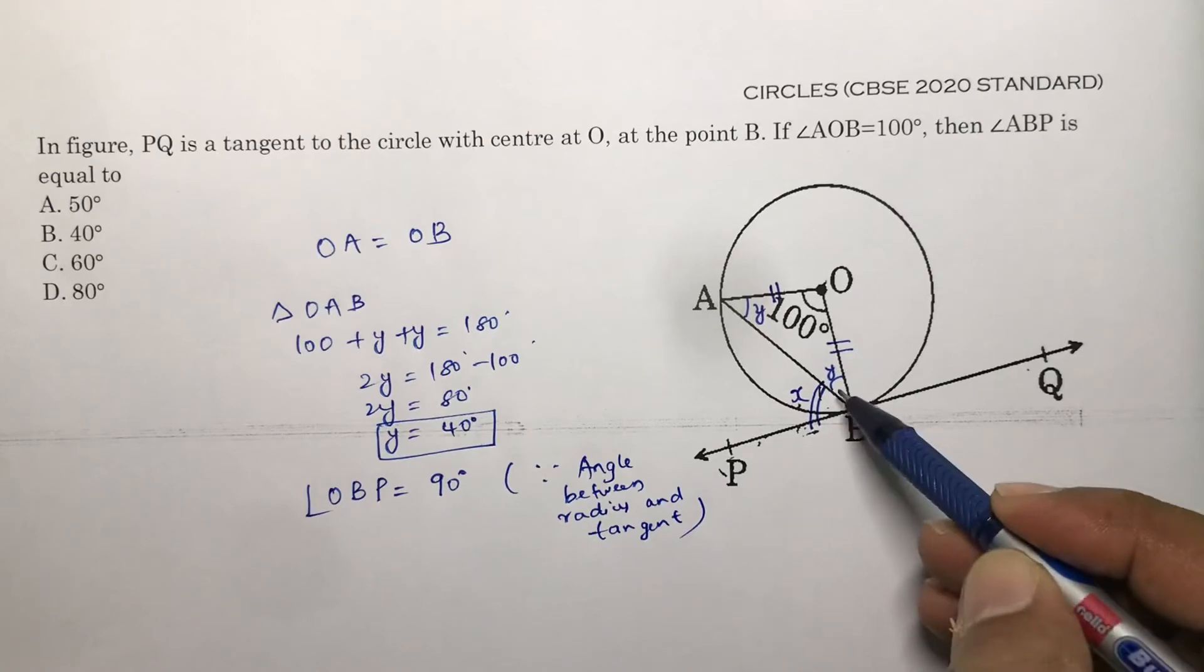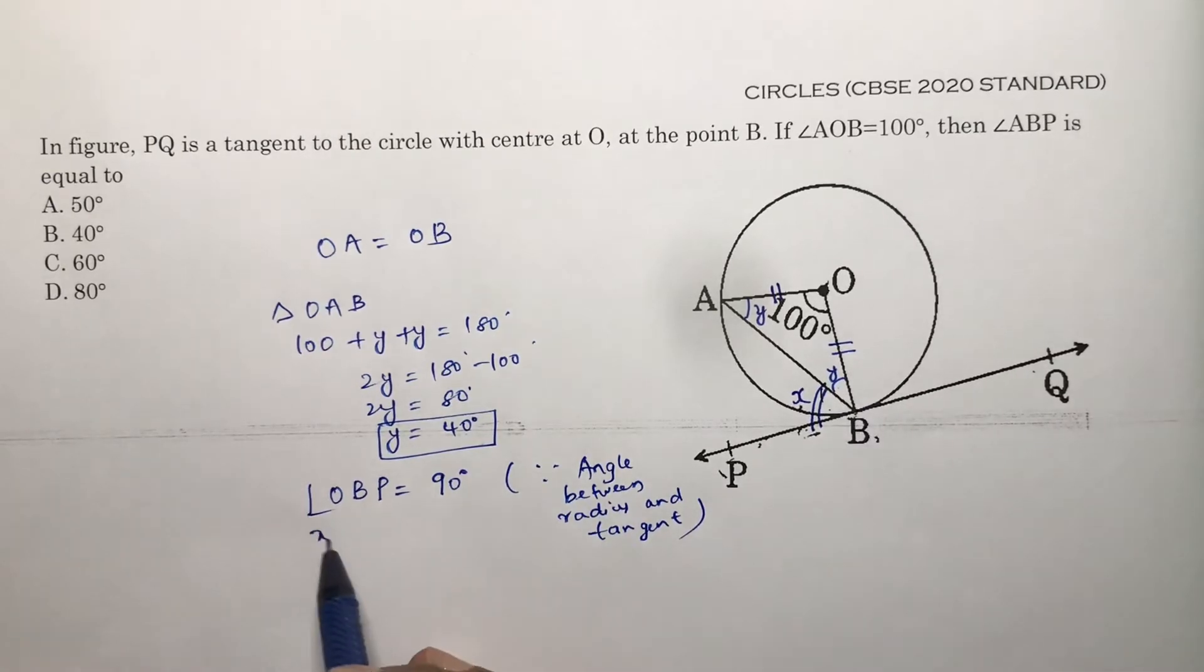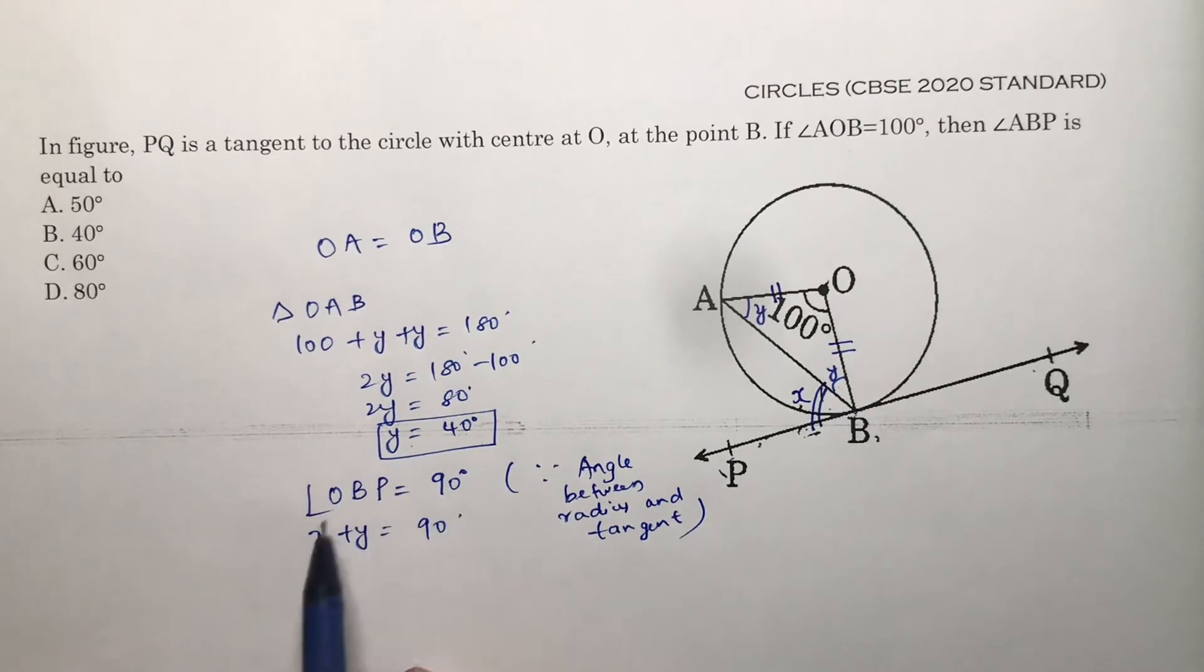But angle OBP equals X plus Y, so X plus Y equals 90. We already found that Y is 40, so 40 plus X equals 90.